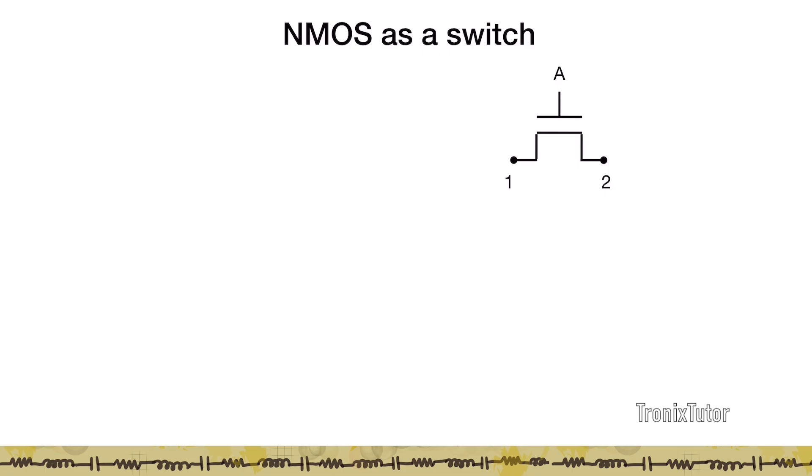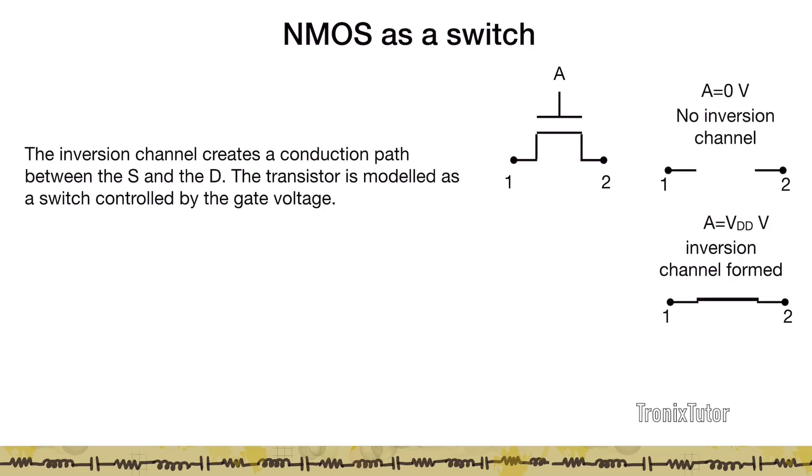Now let's look at the nMOS as a switch a little bit closely. In the most simplistic case, I can define this nMOS to be a switch connected between nodes 1 and 2 and the property of the switch is controlled by the voltage that is applied at this node A. If A is given a low voltage, then essentially no inversion channel is created here and 1 and 2 are open circuited. That is, there is no path between 1 and 2. When I apply VDD at the node A, which is when I apply a high voltage, then essentially that voltage is greater than the VT of the device. So, I create an inversion channel and hence I short the source and drain. This is a very simple first order view of the nMOS as a switch.